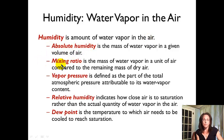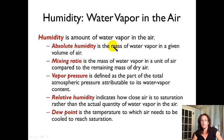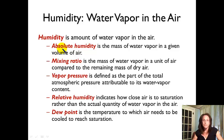We'll talk about absolute humidity and mixing ratio first — they're very similar but a little different. Absolute humidity is the mass of water vapor — so how many grams or kilograms — given in a volume of air: cubic centimeter, cubic kilometer, cubic meter, cubic foot, a liter. So it's mass of water per unit volume of air.